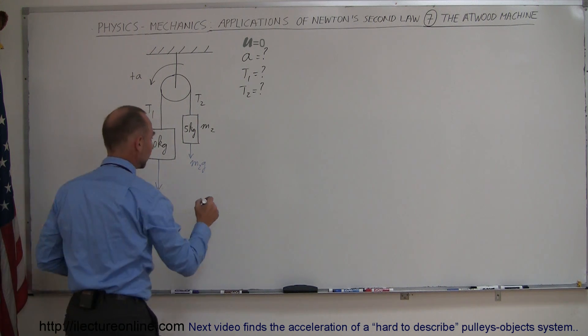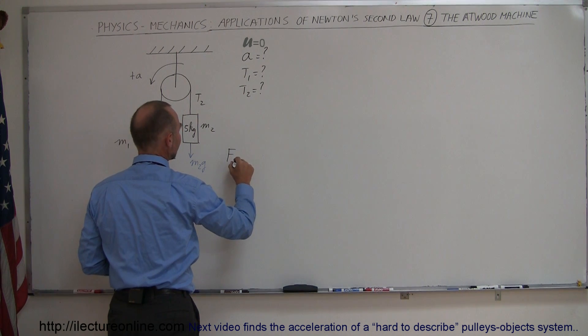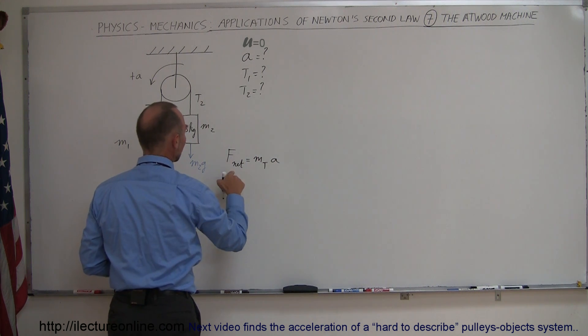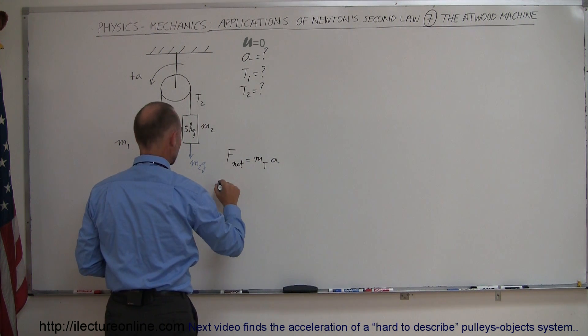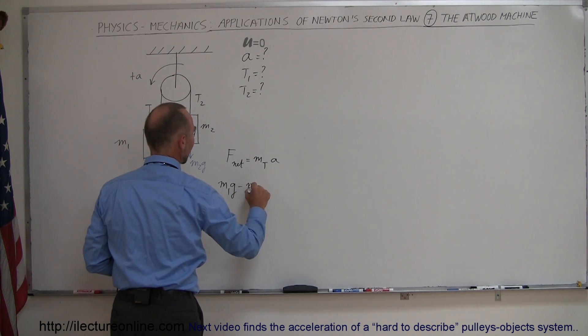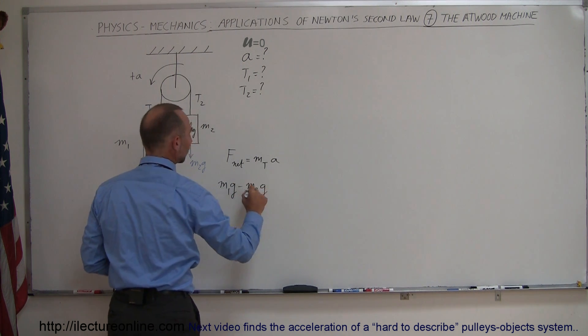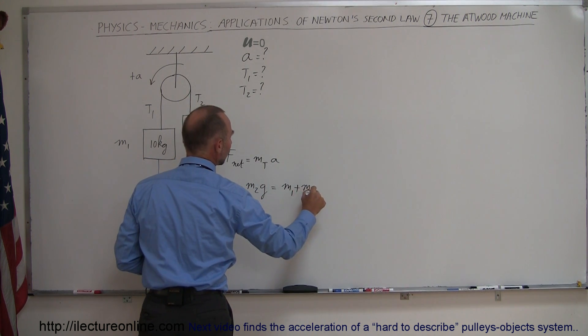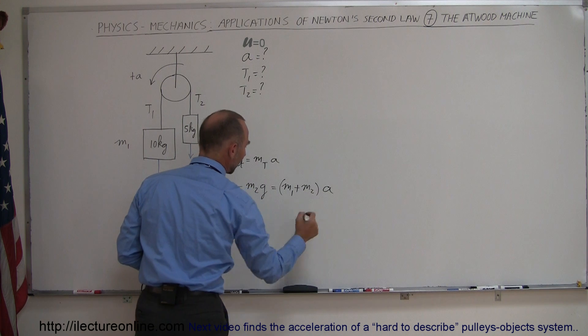And of course using Newton's second law we can write F net equals mass total times acceleration. The net force then of course would be M1g which aids the acceleration minus M2g which opposes acceleration equals the total mass M1 plus M2 times the acceleration.